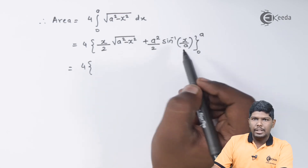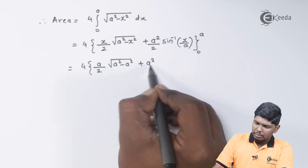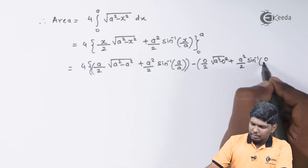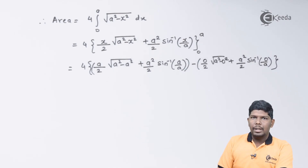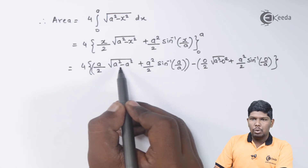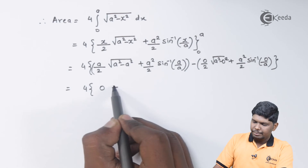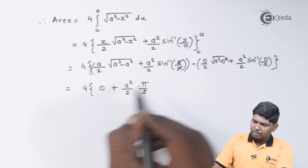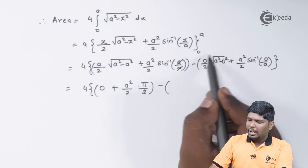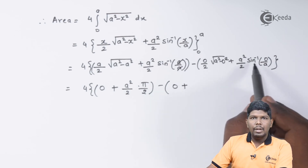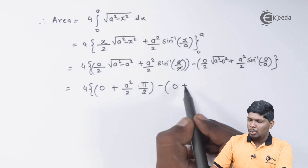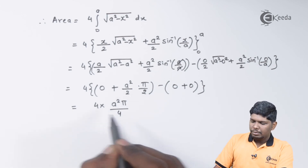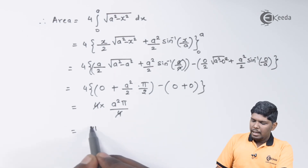Substituting the upper limit x = a: a² − a² = 0, so the square root term becomes 0. Then sin⁻¹(a/a) = sin⁻¹(1) = π/2. Substituting the lower limit x = 0: both terms become 0 since sin⁻¹(0) = 0. So we have 4 × (a²/2)(π/2) = 4 × a²π/4, and the 4s cancel to give πa².